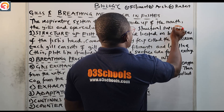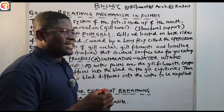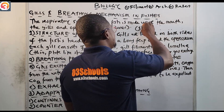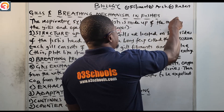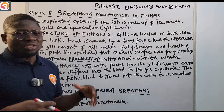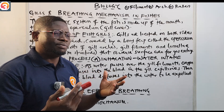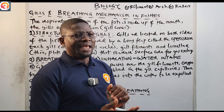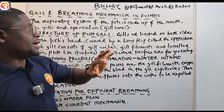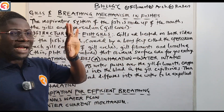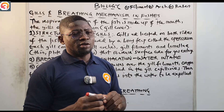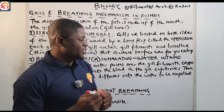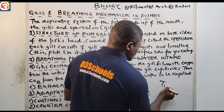The arch provides structural support for the gills. The rakers are basically for feeding — they help to trap food particles so they do not enter into the gills. So the gills are made up of three major parts: the filaments, the arch, and the rakers, and we have seen the function of each part.